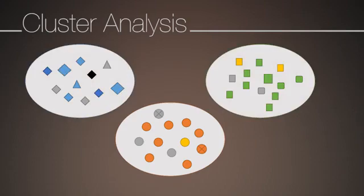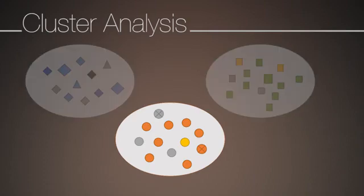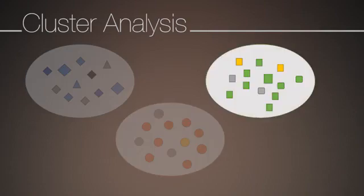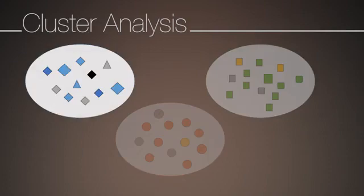What is important is to be able to describe each cluster. In this simple example, the orange cluster may be described as a group of multi-colored round objects. The green cluster may be characterized as a group of square objects. And the blue cluster consists of triangular and diamond-shaped objects.